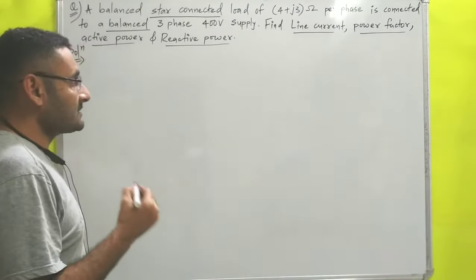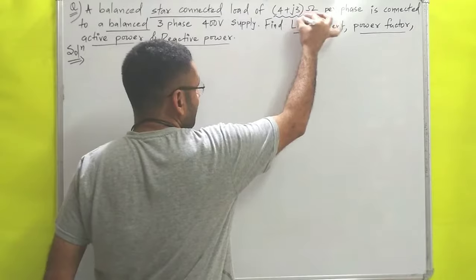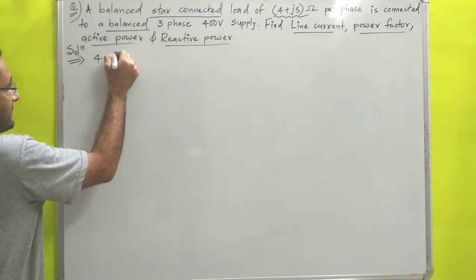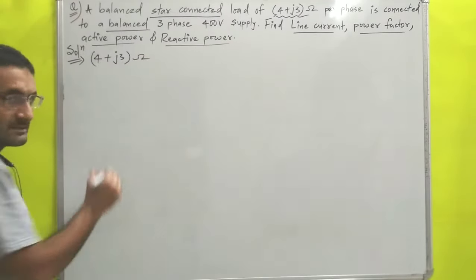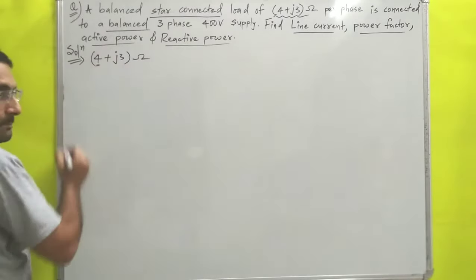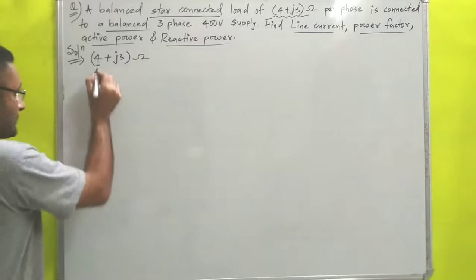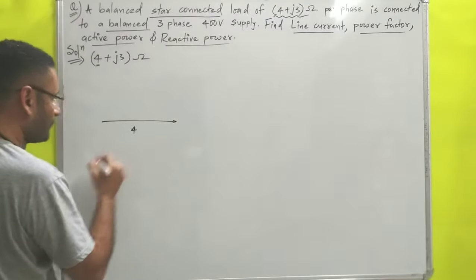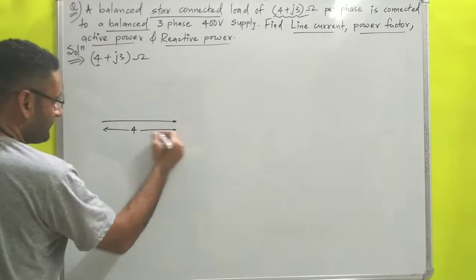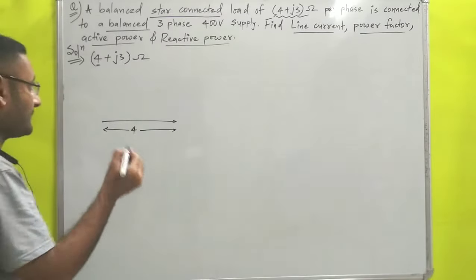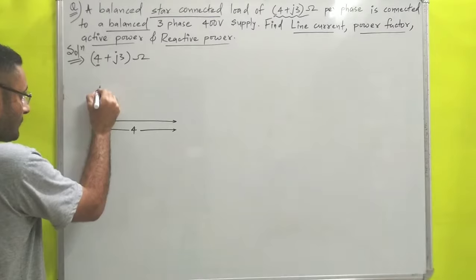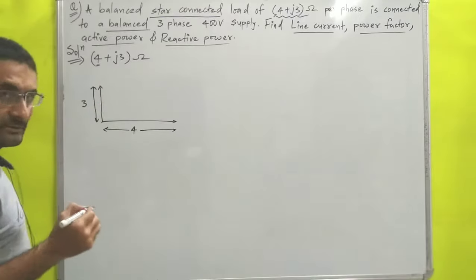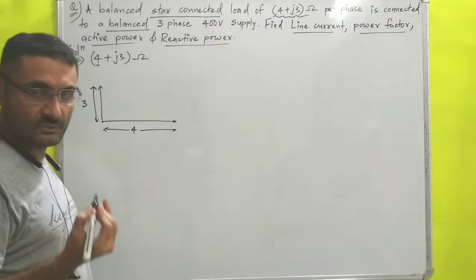Before starting the calculation, we'll understand the meaning of this impedance load: 4+j3 ohms. The real part is 4, represented on the x-axis, and j3 means the imaginary part is 3, represented on the y-axis.